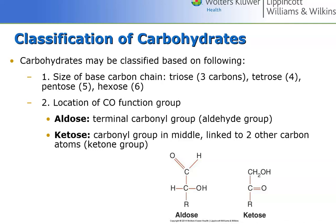They typically have those types of formulas and you multiply them all by however many carbons are in the chain. So if it's a triose, it would be C3H6O3. If it's a hexose, C6H12O6. Does that make sense? So you keep multiplying out all of your numbers.